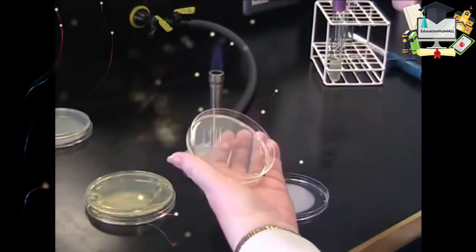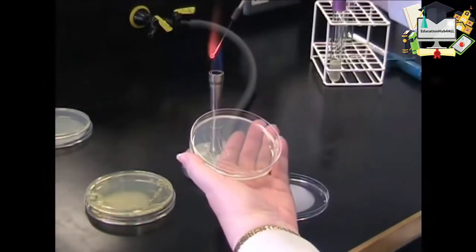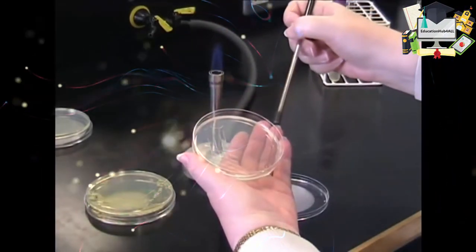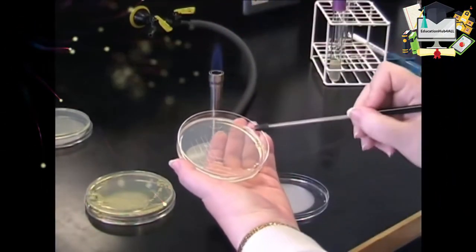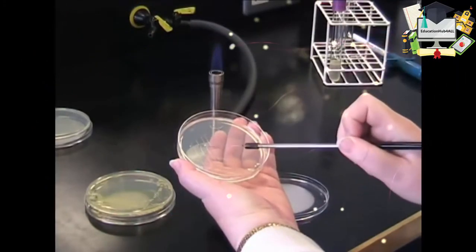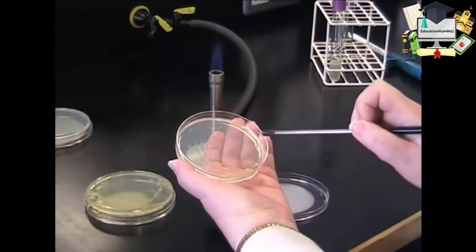At each point where you rotate the plate, you need to cool, flame and cool your loop. By doing this, you are diluting the number of bacteria that are on the loop and therefore reducing the amount of bacteria across the plate.